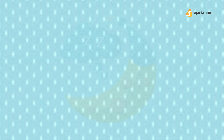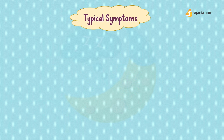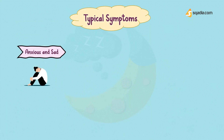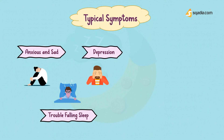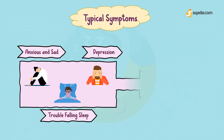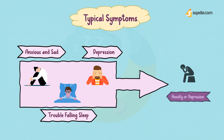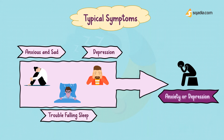If a patient shows typical symptoms like feeling anxious or sad for long periods of time, trouble falling asleep, anxiety or depression, or trouble staying asleep, he might be suffering from anxiety or depression, which involves a chronically anxious or depressed mood.